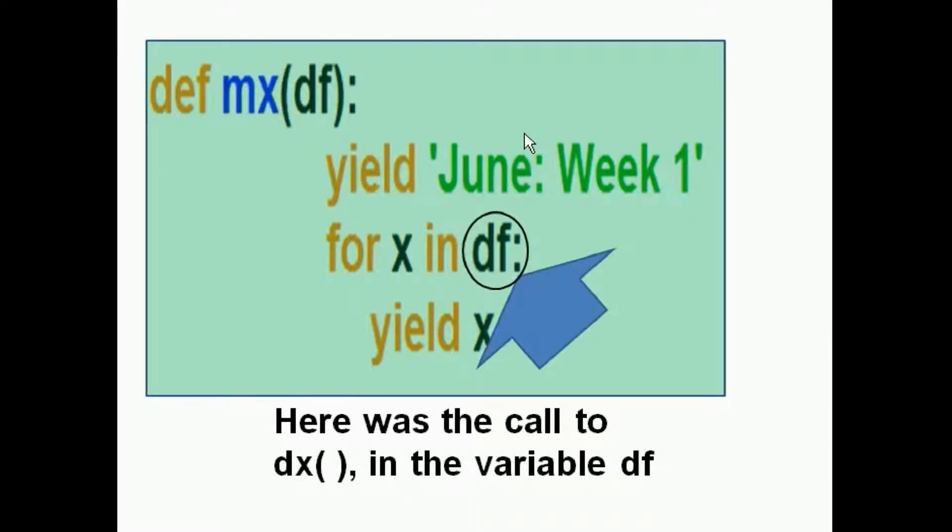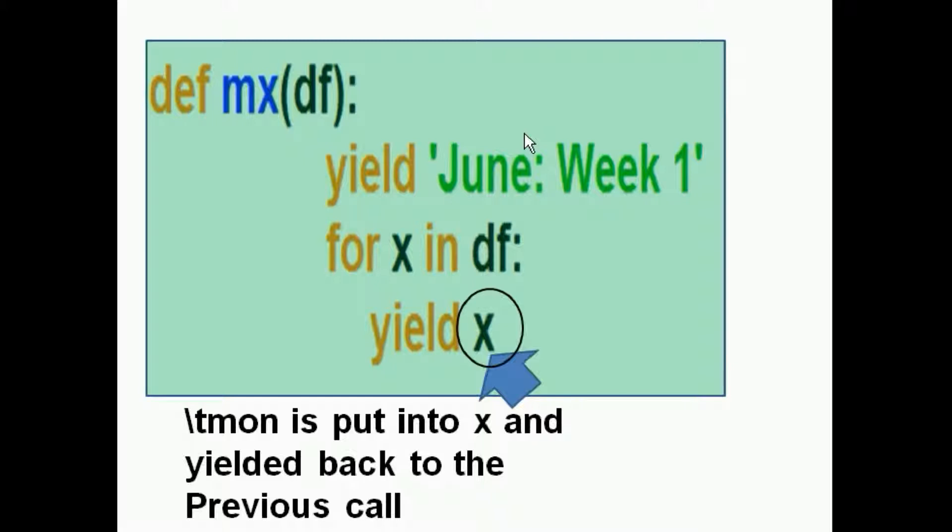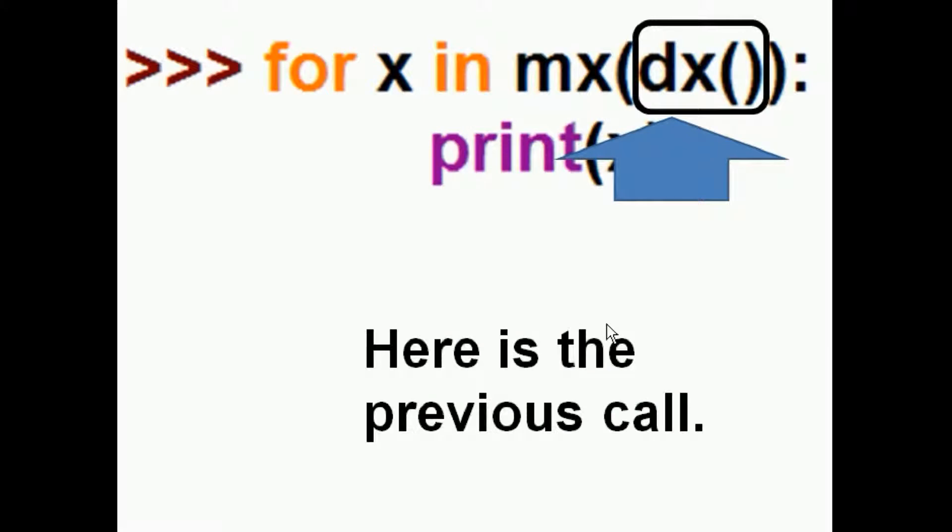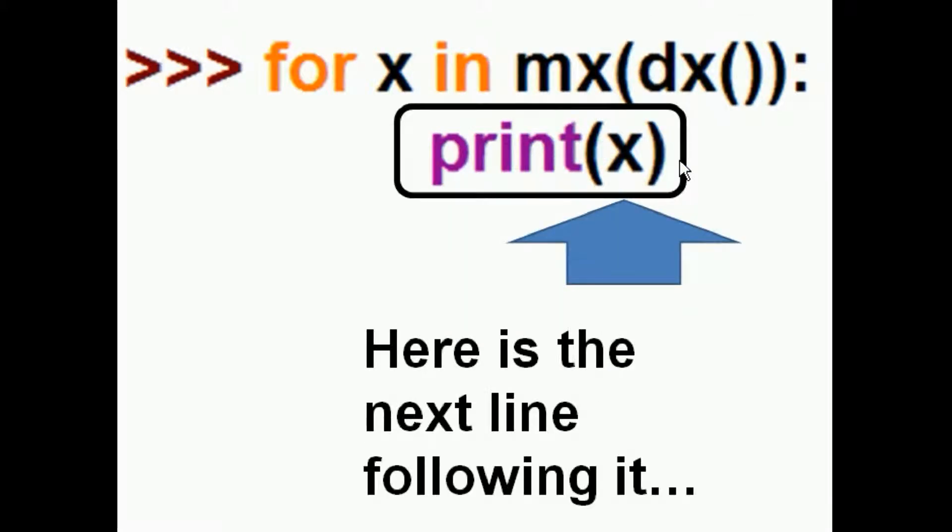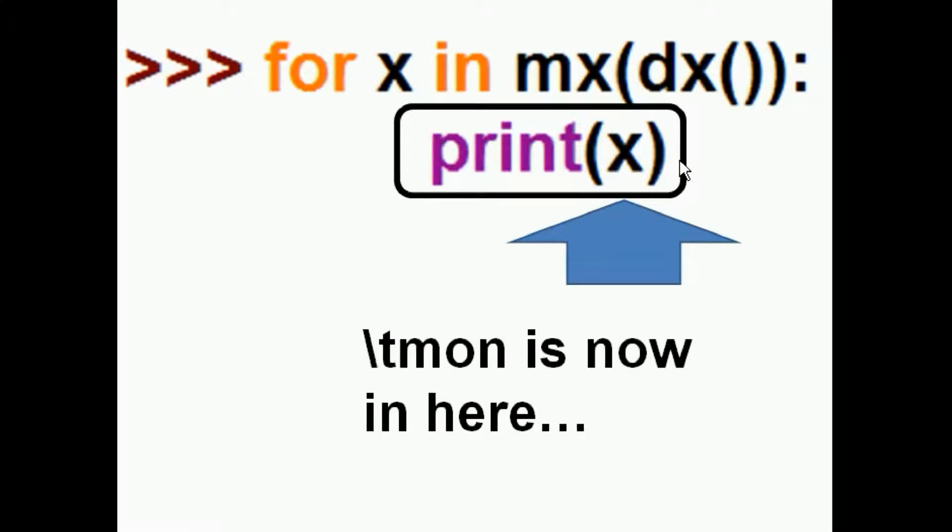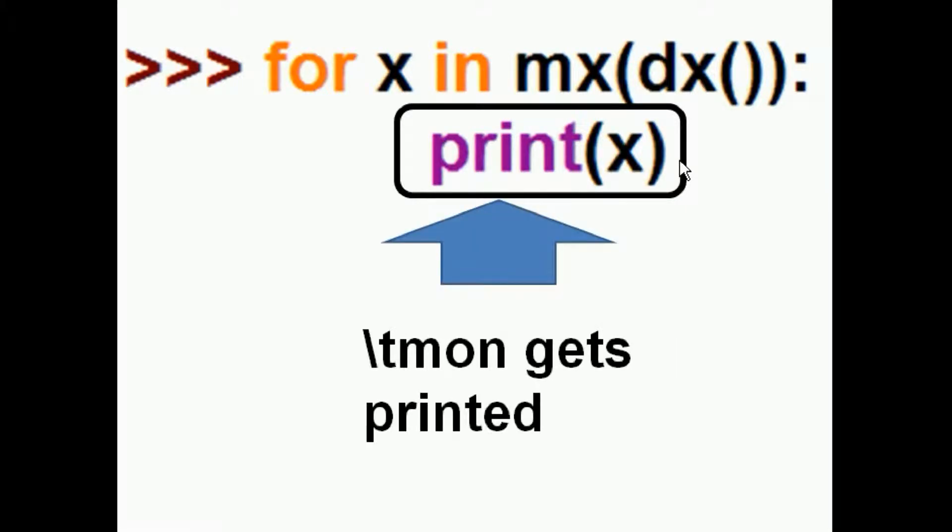Well, the yield is going to take him back to the previous function that called this guy. That's MX. And there's the function call. And he goes to the line following that, slash T Monday is put into that X and yielded back to the previous call. Let's go there now. So here's the previous call, and here's the next line following it. Slash T Monday is now in here and he gets printed out. And now you've got June week one, Sunday, and Monday.